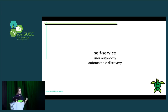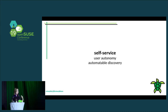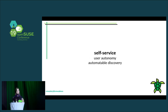Self-service means users having full control over their applications, and having the infrastructure be fully automatable, fully discoverable — never having to file a ticket with your cloud operator. The applications running on the system should always have enough information to make their own decisions without a human's involvement, or they should be able to discover enough information about the system to make their own decisions, for example when it comes to things like auto-scaling.